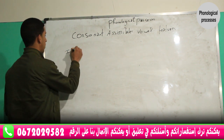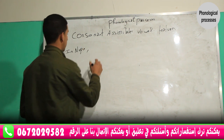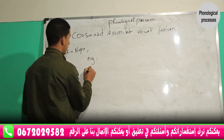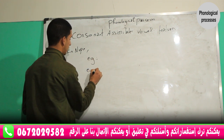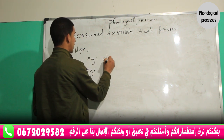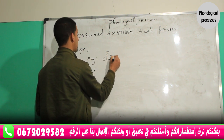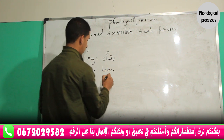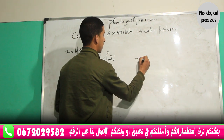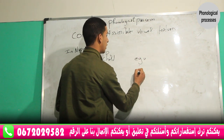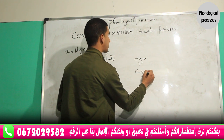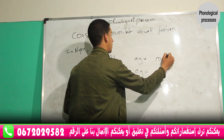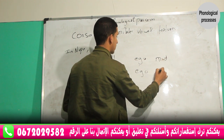We have examples from Igbo, a West African language. In Igbo, we have 'Iggi' — this means 'child'. We have 'Iggi' — this means 'beer'. And we have 'Iggi' — this means 'mud', and 'Iggi' — this means 'grass'.